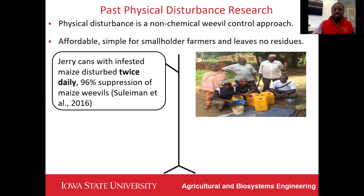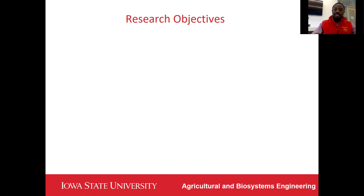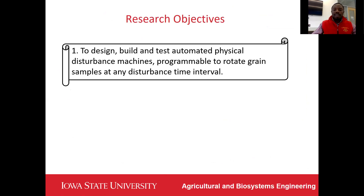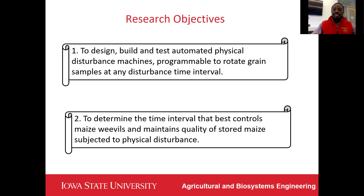With this in mind, we had two research questions. One was: can we automate physical disturbance systems, since previous disturbances were manually performed? Hence our first objective was to design, construct, and test automated physical disturbance machines programmable to rotate grain samples at any disturbance time interval. The second research question was: what is the best time interval to disturb infested maize and control maize weavers, since previous researchers used any disturbance interval they thought was suitable? Our objective number two was to determine the best time interval that controlled maize weavers while maintaining the quality of stored maize.